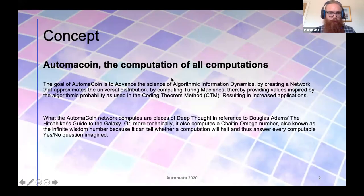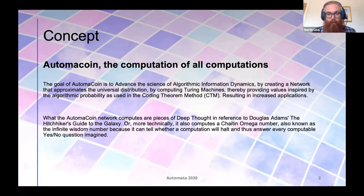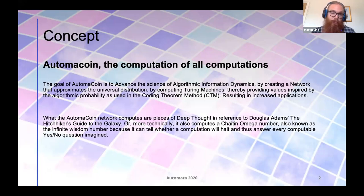The concept of Atomacoin — the computation of all computations — is a network that computes pieces of deep thought, in reference to Douglas Adams' Hitchhiker's Guide to the Galaxy, or more technically, it computes the shaped omega number. Really, the goal of Atomacoin is to advance the science of algorithmic information dynamics by creating a network that approximates the universal distribution by computing Turing machines, thereby providing values inspired by the algorithmic probability as used in the coding theorem method.